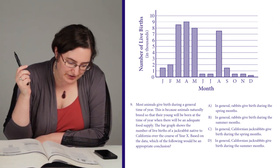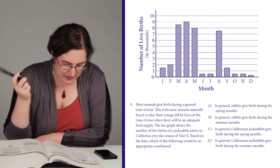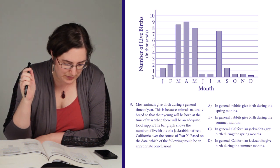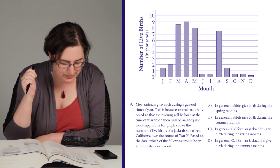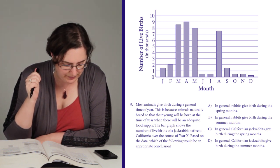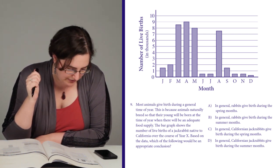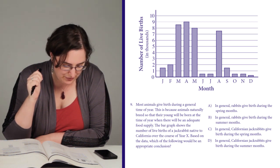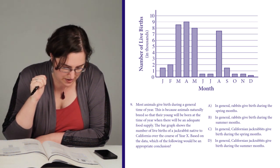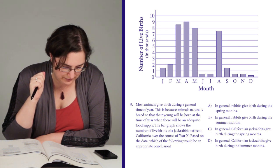Most animals give birth during a general time of year. This is because animals naturally breed so their young will be born at the time of year when there will be an adequate food supply. I'm not sure that information is really relevant. The bar graph shows the number of live births of a jackrabbit native to California over the course of year X. Based on the data, which of the following would be an appropriate conclusion?